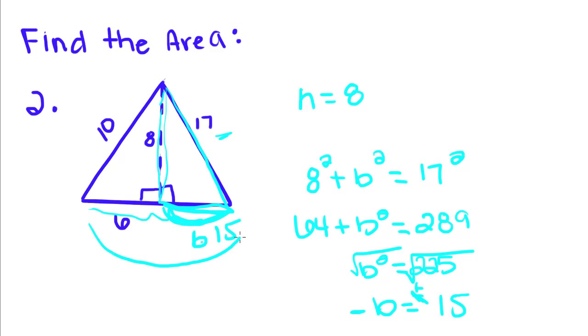So to get the whole base, I'm going to add 6 plus 15. If you do that, you'll get 21. So to find the area of this triangle, we're going to take half the base, which is 21, times the height.